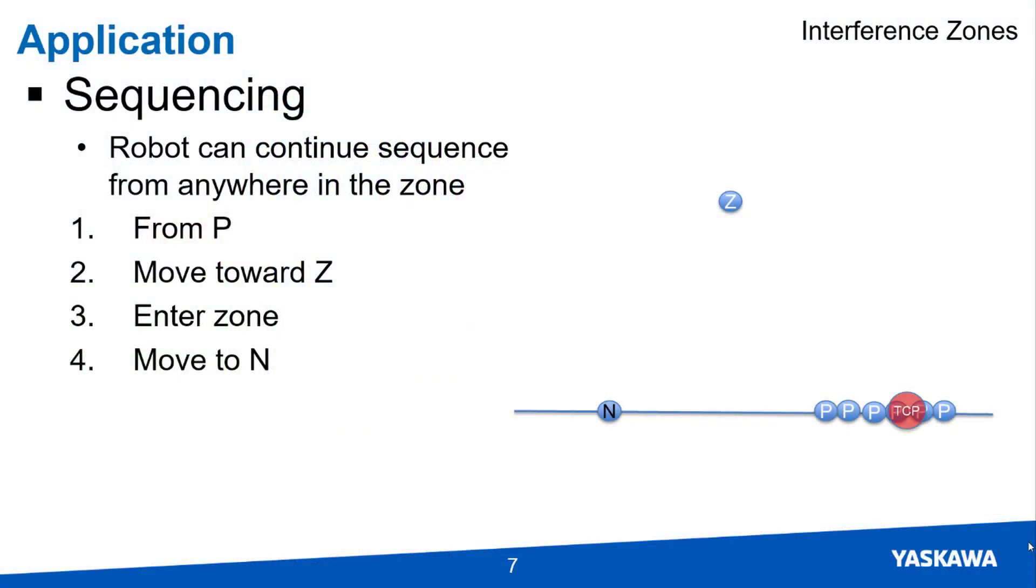Interference zones are also useful for sequencing. For example, it may not be necessary to move to an exact position during the cycle, especially if the exact trajectory changes.